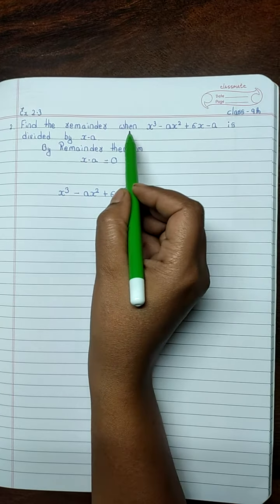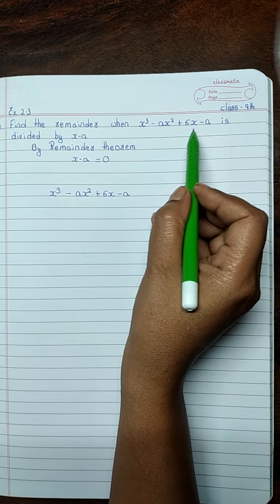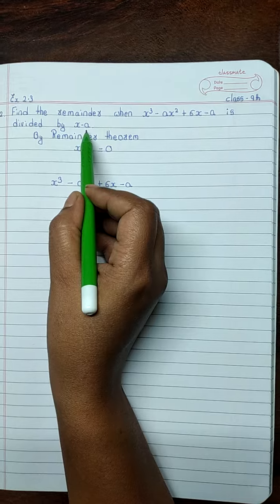Find the remainder when x cube minus ax square plus 6x minus a is divided by x minus a.